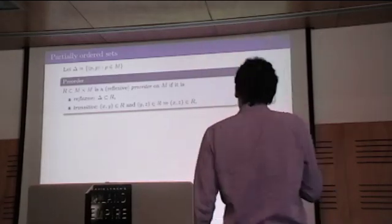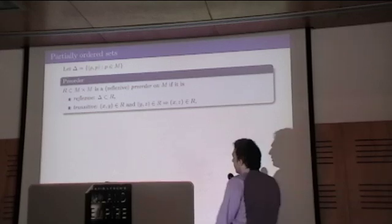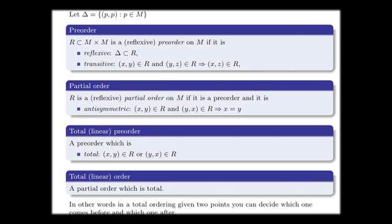Let me also remind what is a partially ordered set or, more generally, we start with the pre-order, which is a reflexive and transitive relation. If we add the anti-symmetric property, we get partial order.